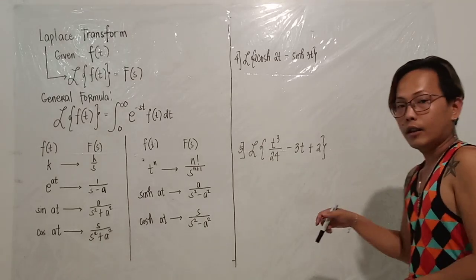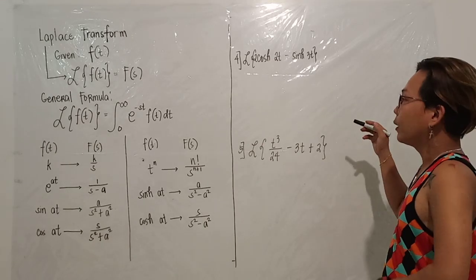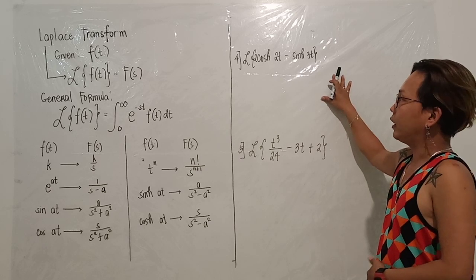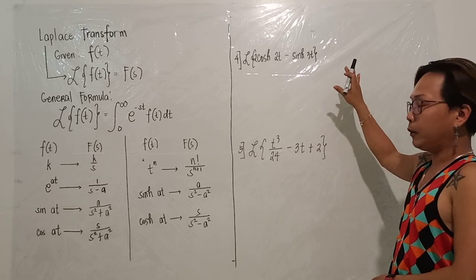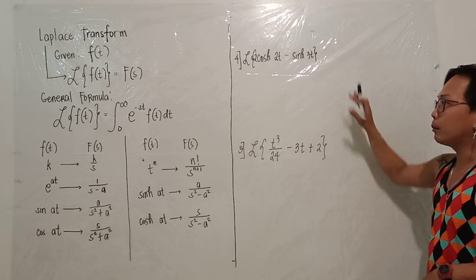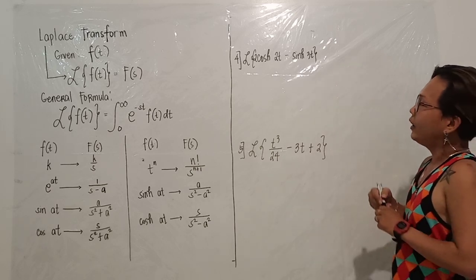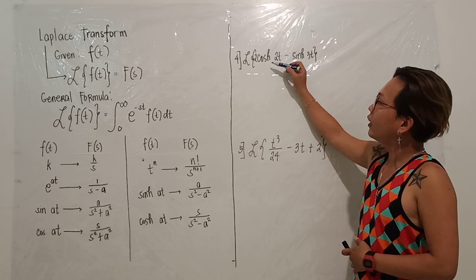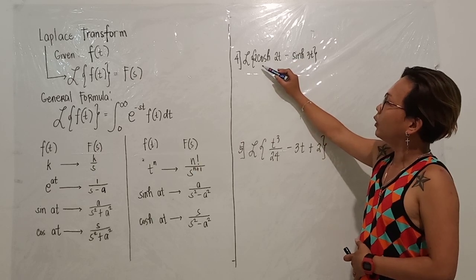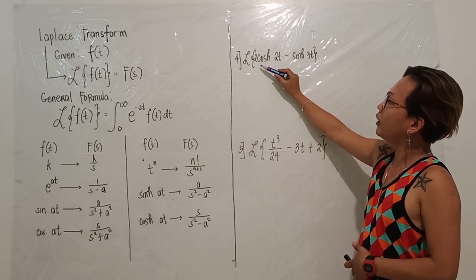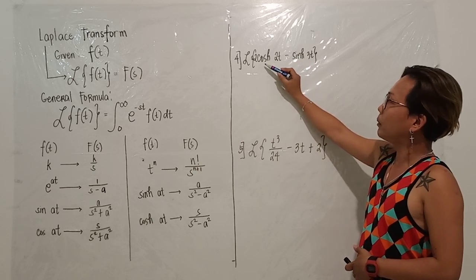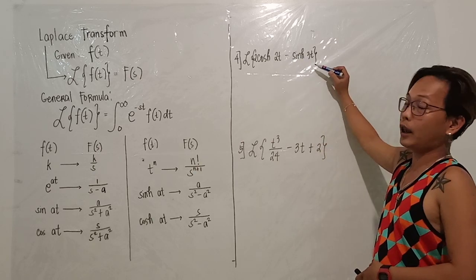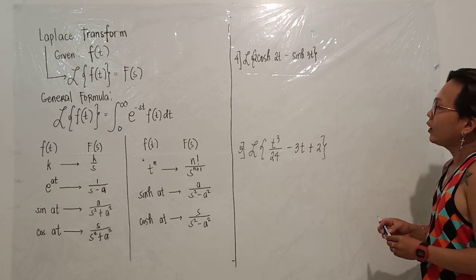Continuation from the topic of the linearity property, we have example number 4. We will have to get the Laplace transform of the quantity 2 hyperbolic cos 2t minus hyperbolic sin 3t.